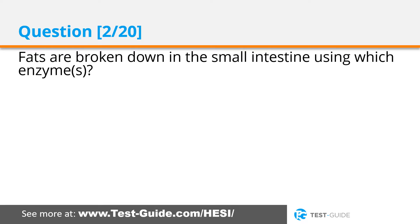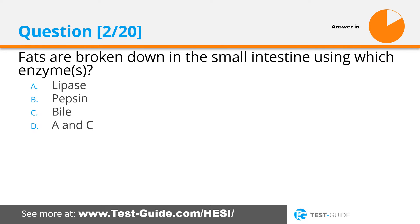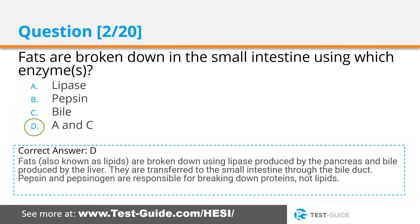Question two: Fats are broken down in the small intestine using which enzymes? Options: lipase, pepsin, bile, or A and C. Correct answer D. Fats, also known as lipids, are broken down using lipase produced by the pancreas and bile produced by the liver. They are transferred to the small intestine through the bile duct. Pepsin and pepsinogen are responsible for breaking down proteins, not lipids.